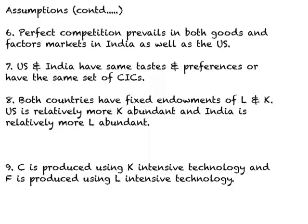The seventh assumption is that the U.S. and India have the same tastes and preferences — in other words, their tastes and preferences can be represented by the same set of community indifference curves, or CIC in short. Both countries have the same set of CICs.